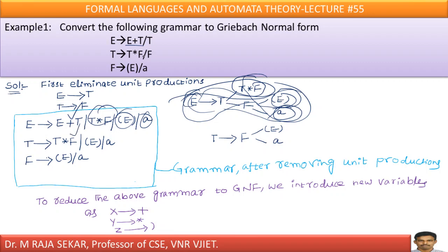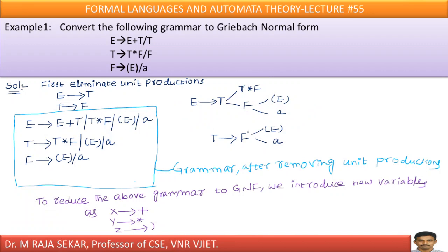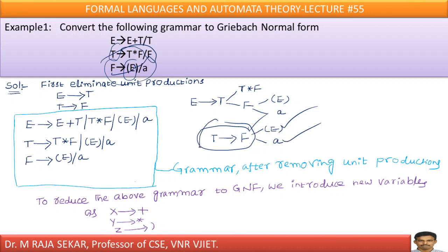T goes to T star F. T goes to F is a unit production, so we have to remove that unit production. T goes to F — since F goes to left parenthesis E right parenthesis and F goes to small a, therefore the productions are T goes to left parenthesis E right parenthesis and T goes to small a. You are getting two new productions. T goes to T star F is one production, and the other two productions are left parenthesis E right parenthesis and T goes to A. This is the resultant production.